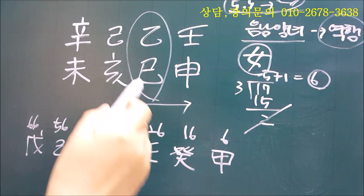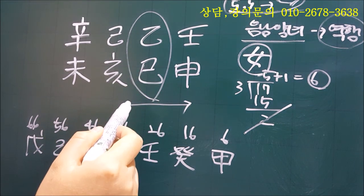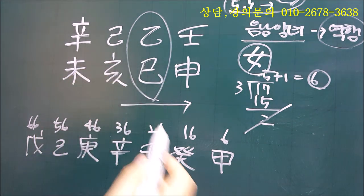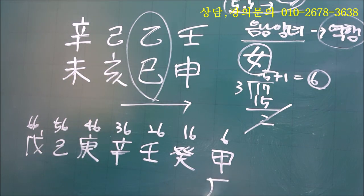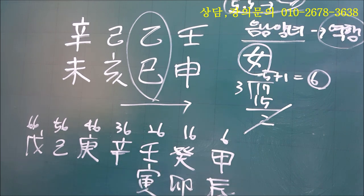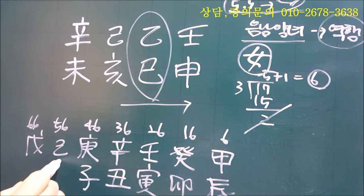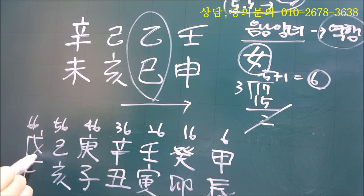지지도 그대로 마찬가지예요. 사, 사오미의 사예요. 여름 글자가 시작되는 거기 때문에 앞에 글자는 당연히 봄이 끝나는 진이 되고요. 임묘진이 되겠죠. 그러니까 이 순서대로 적으면 됩니다. 그러면 어플을 보지 않아도 기둥을 적을 수 있는 거예요. 해자축, 그쵸? 앞에 술 이렇게 적을 수 있습니다.